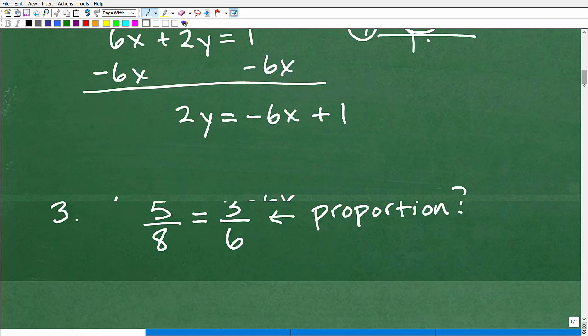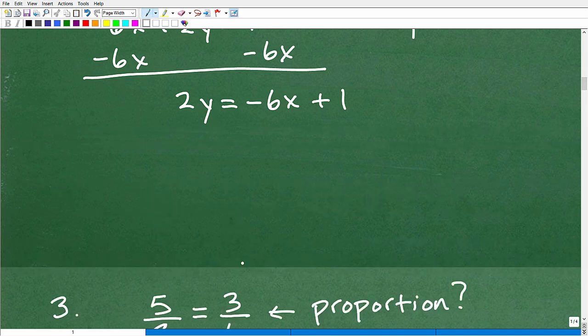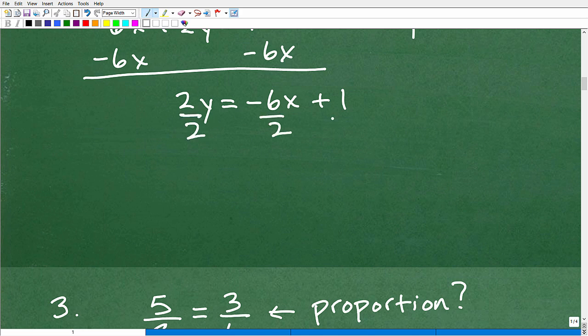All right, so we're almost there. Give myself some more room. So how do I solve for y? Well, I just got to divide everything by two. And I get y is equal to -3x + 1/2.